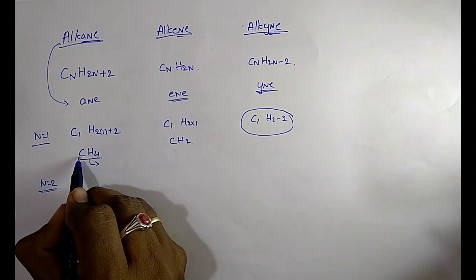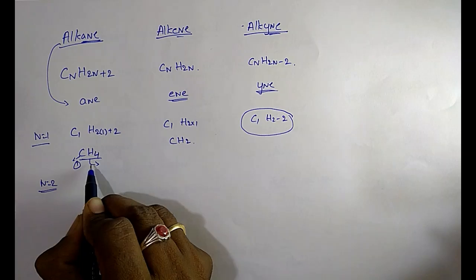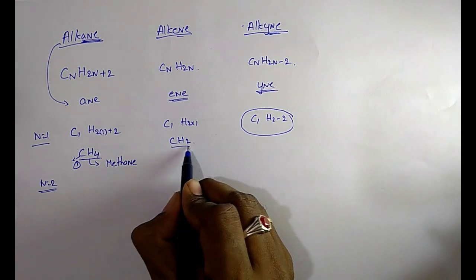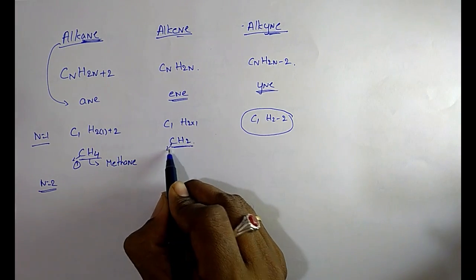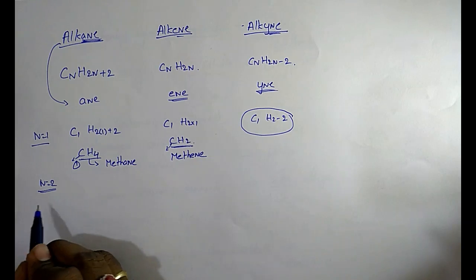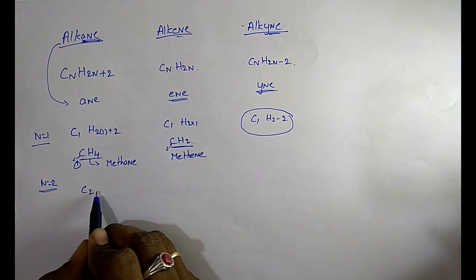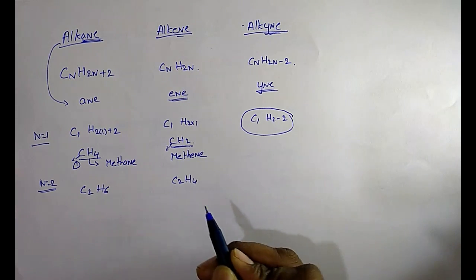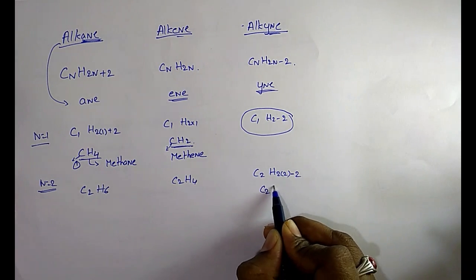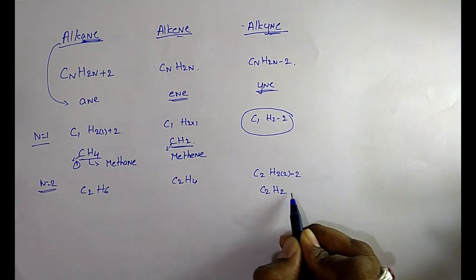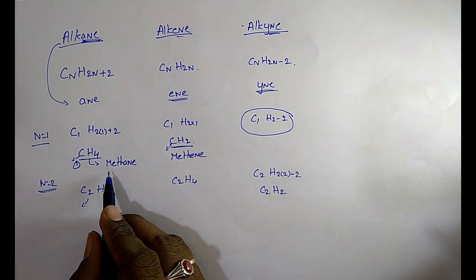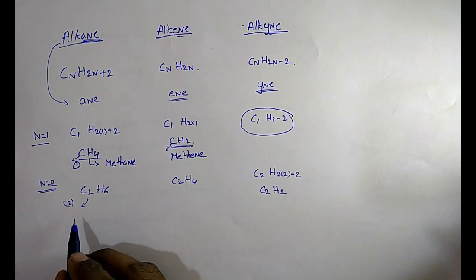For n=1: alkane gives CH4 — carbon atoms are 1, prefix is 'meth', suffix is '-ane', so it is methane. For alkene with n=1, CH2 would result, and for alkyne the formula doesn't exist. For n=2: alkane gives C2H6 (ethane), alkene gives C2H4 (ethene), alkyne gives C2H2 (ethyne).